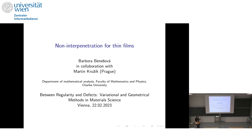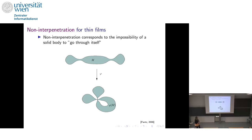Let's start very easy. What do I mean by non-interpenetration for thin films? I copied a picture from a very old paper by Pantz, which I will be referring to at some point. What happens in that picture is exactly what we don't want to happen — this is interpenetration. You have your solid body and you deform it somehow, and then accidentally it just went through itself.